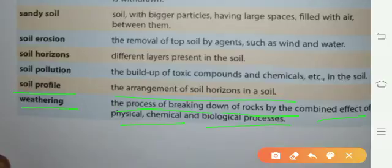جو physical, chemical and biological processes ان کے combined effect کے ساتھ جو rocks ہیں وہ ٹوٹ جاتی ہیں ان سے soil بنتی ہے تو وہ کیا کہلاتا ہے weathering کہلاتا ہے.